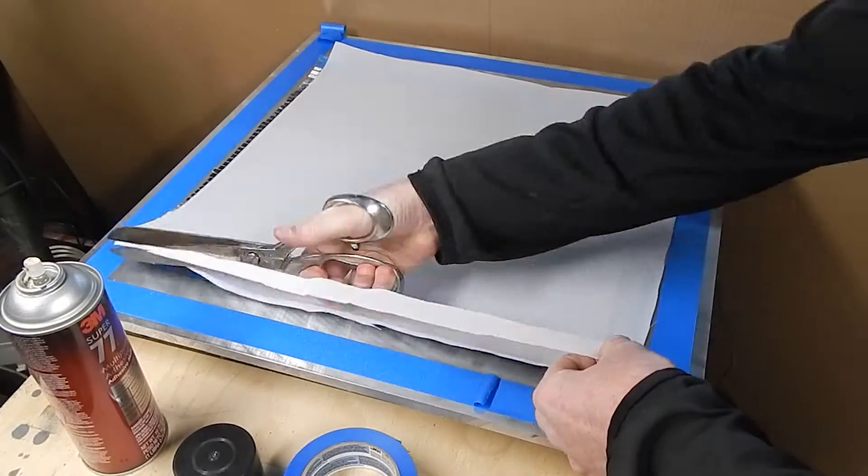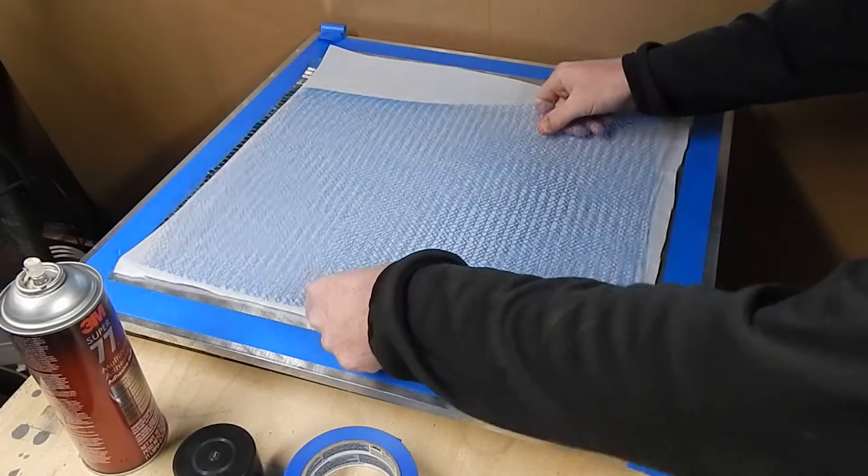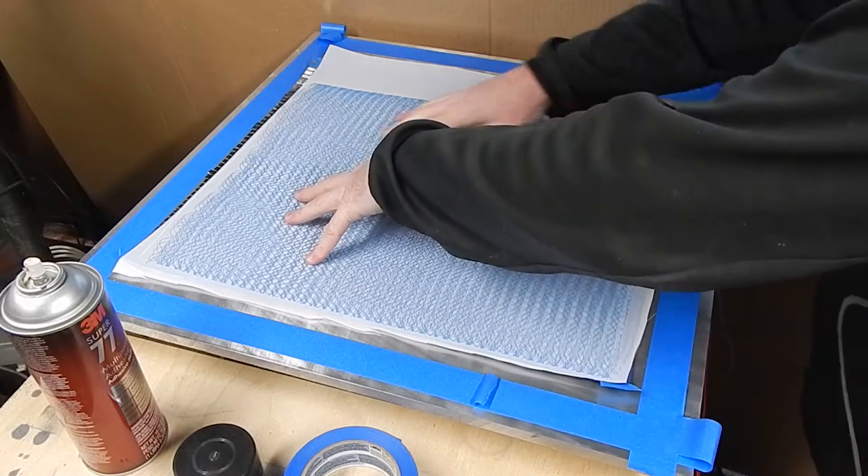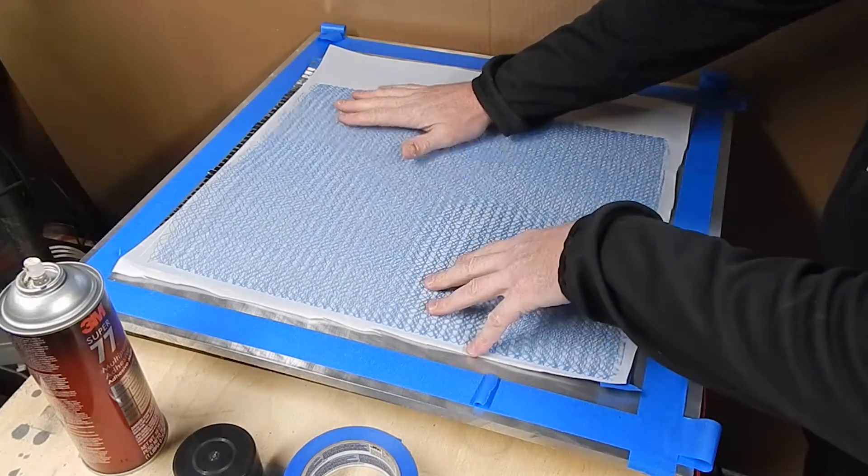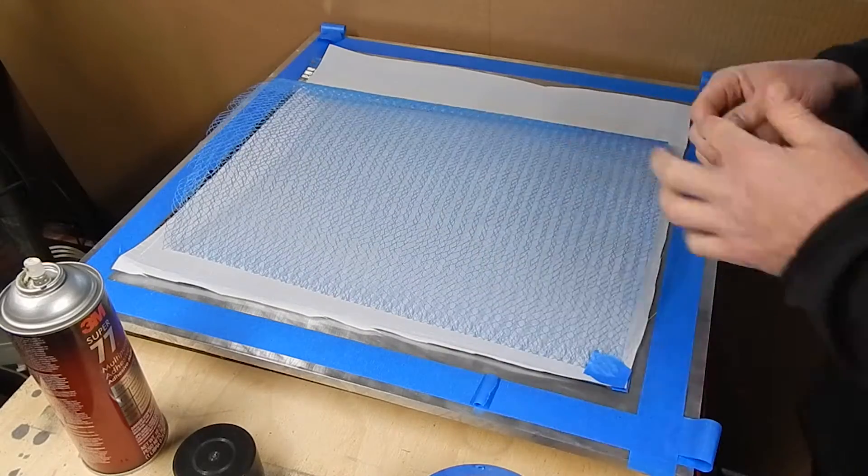A coated peel ply would be better here because this Incofu nylon flow media that I'm putting on over the top is going to soak up a lot of resin. It'd be better to have a really easy release even if you have to double peel ply.